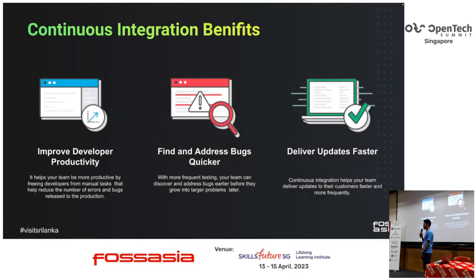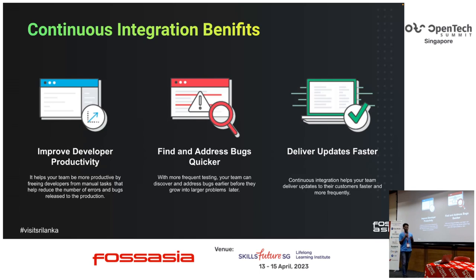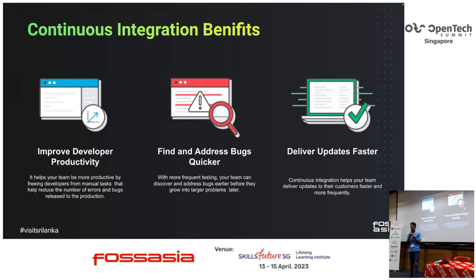There are some benefits of using CI. First is developer productivity — you don't need to build your applications manually, which is time-consuming, so you can save time. You can find bugs and address them earlier, before they reach production and grow into bigger problems. And you can deliver updates faster — you just push the code, the CI runs, and you don't need to spend time on manual work.